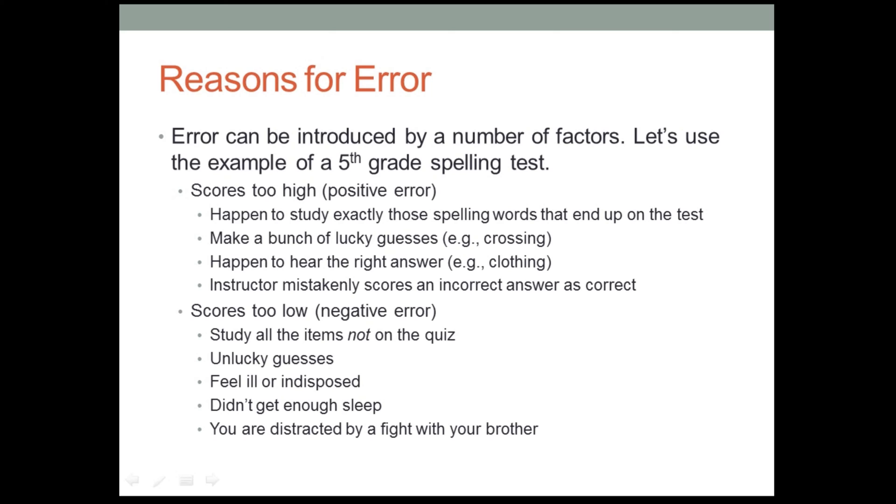Or just before we happened to walk into the test, two of our pals were outside the classroom, and they were talking, and one was saying to the other, how do you spell clothing? I think that might be on the test. And it turns out you hadn't studied clothing, but you hear the answer, C-L-O-T-H-I-N-G. And you go, oh, yeah, it's like clothing, and you walk in, and by golly, that was on the test, and you got it right. And then there's also the possibility, another possibility, is that your teacher didn't notice that you actually spelled the word wrong. Your handwriting wasn't so good, and your teacher thought it was correct, but it was really wrong. So that could introduce positive error as well. So these are just some examples of how you might get a score that's higher than your actual ability.